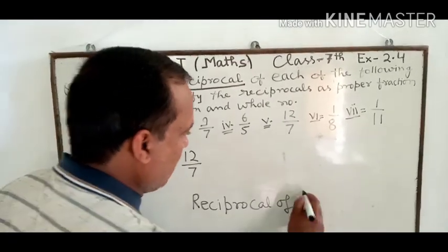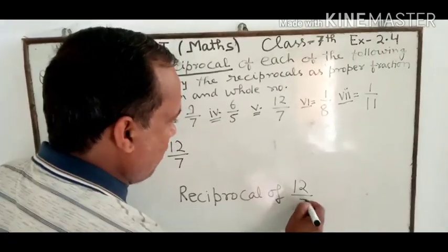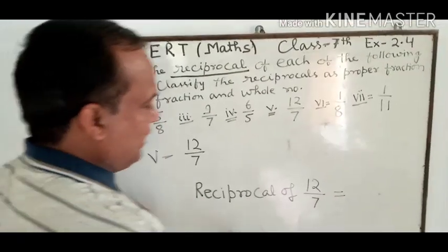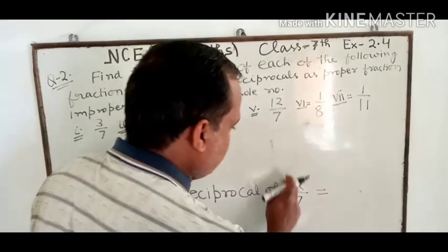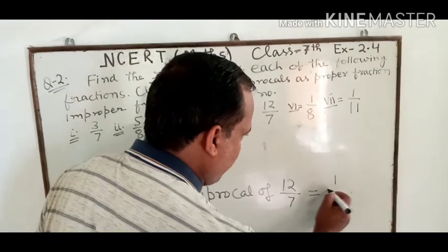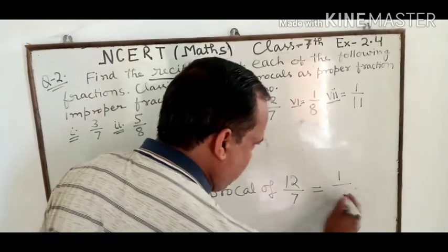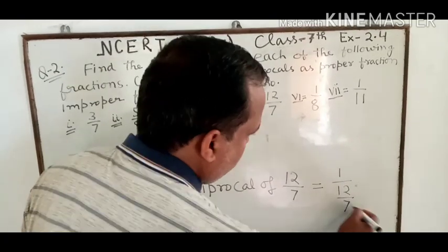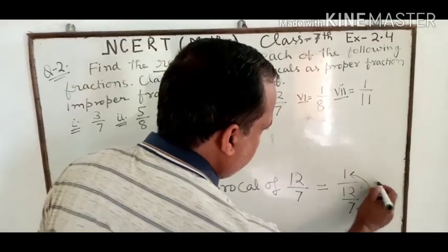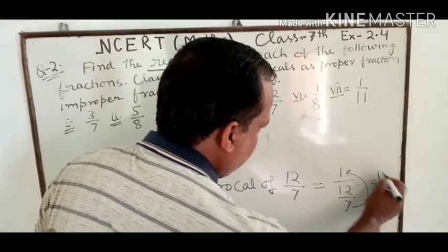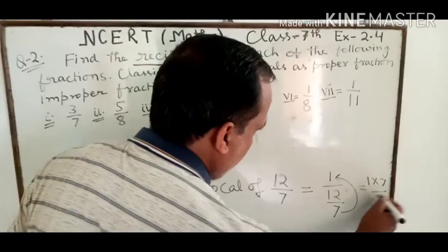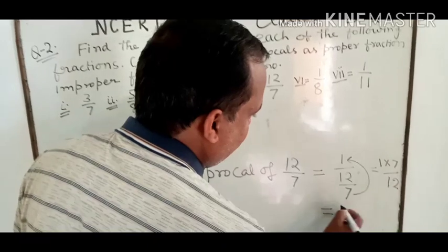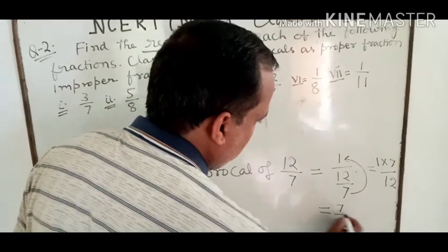Fifth part: 12 upon 7. Reciprocal of 12/7 equals 1 upon (12 upon 7). अब यह 7 ऊपर shift कर गया, तो 1 multiply 7 upon 12 = 7 upon 12. This is your answer for part five.